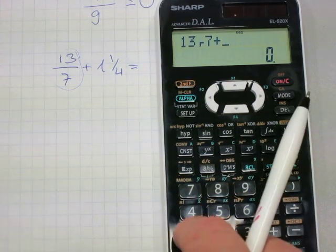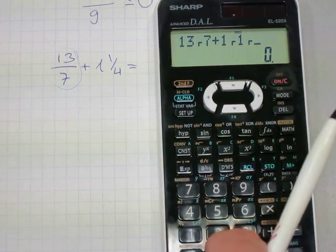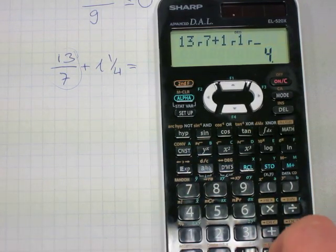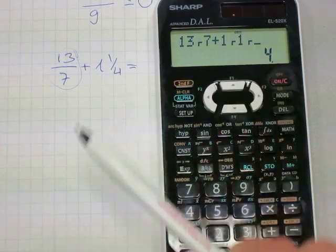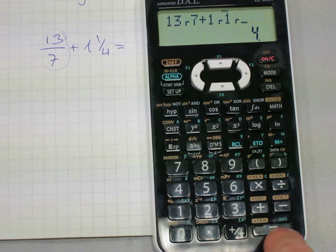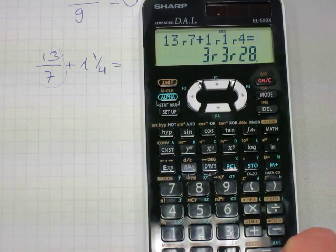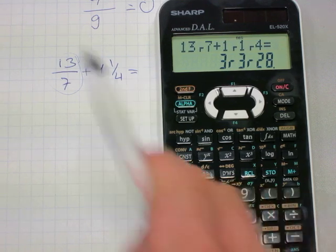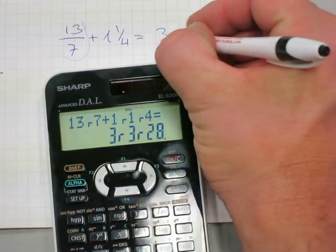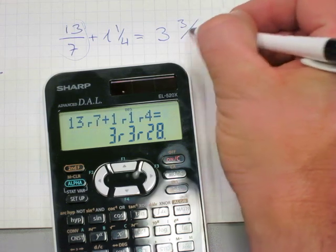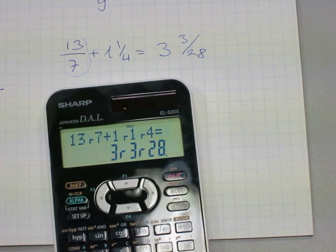Now I'm entering 1 and 1 quarter. 1, ABC button, 1, ABC button, 4. Now I entered 1 and 1 quarter. On the calculator I'm pressing the equal sign. There you go. That's the answer. And this is how you make sense of the result. The answer is 3 and 3 twenty-eighths.